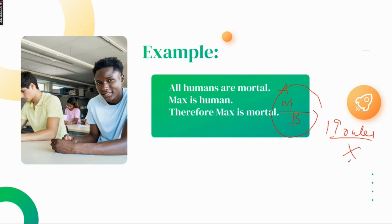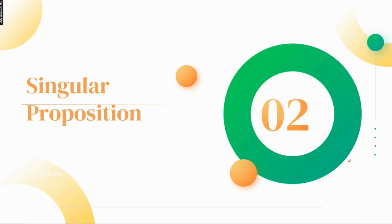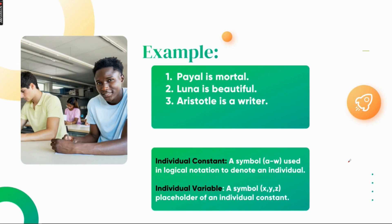And then there was a 20th century philosopher who intensively talked about this need for quantification. So now before that we need to move on to the next topic, which is singular proposition. Now what is singular proposition? If it is being talked about an individual person, individual state, or individual thing, you have a singular proposition.